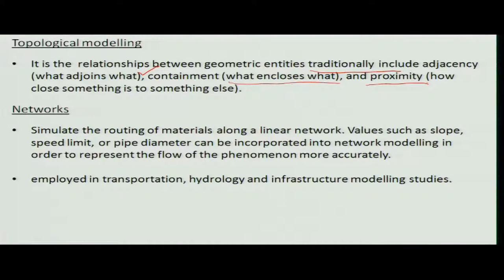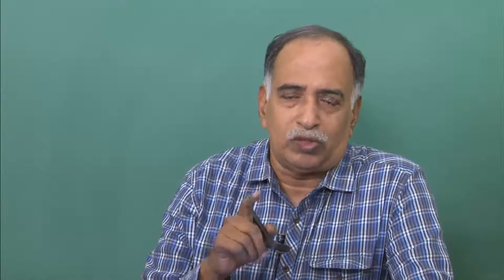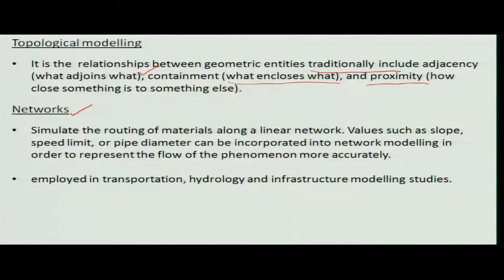Another type is network analysis. Networking is about how to reach a particular place — faster or slower — and what routes exist from one section to another. This proximity and networking analysis is normally done for transportation, such as how fast you can reach a railway station or airport. It is also used in hydrology to find the shortest distance water can be transported, and for other infrastructure like canal alignments.